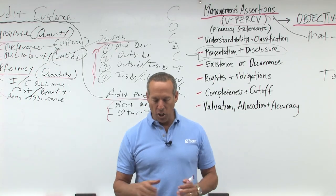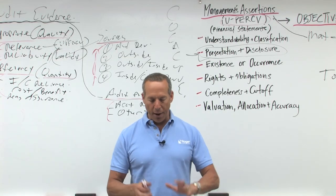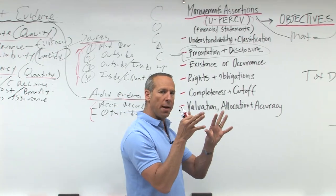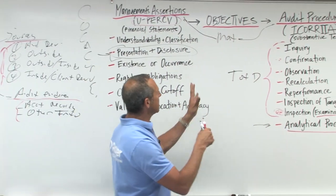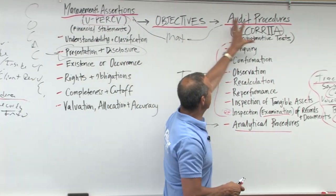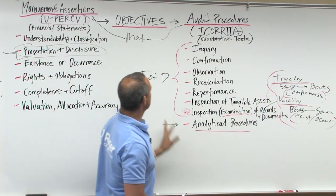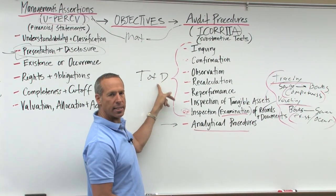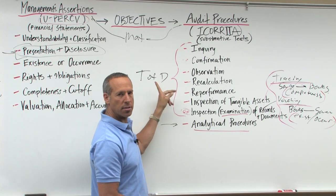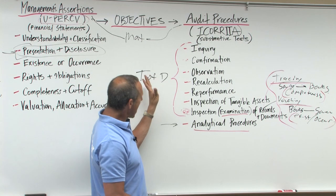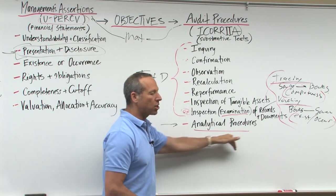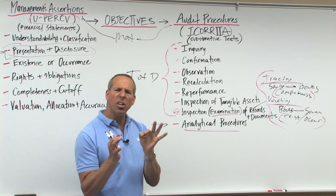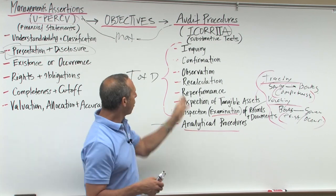Let's talk about analytical procedures. Remember, we said audit procedures have two types: test of details of accounts, transactions, balances, and disclosures, and analytical procedures. That's what we're looking at now. What are analytical procedures?